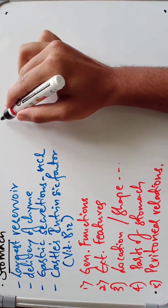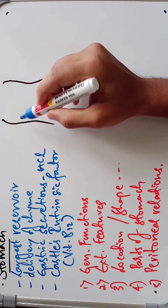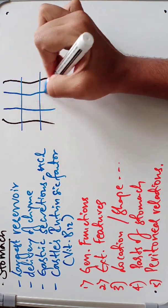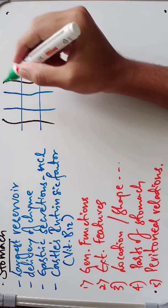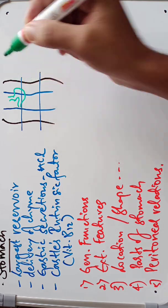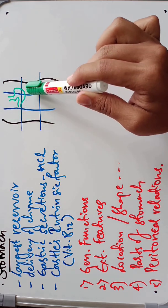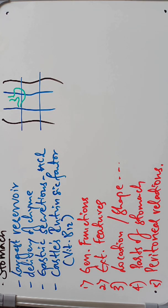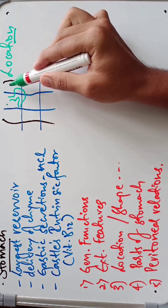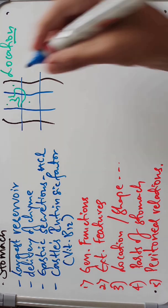Coming to the location of the stomach — the region of the abdomen is divided into nine regions by two planes: the transpyloric plane and the trans-tubercular plane, plus two vertical lines called the right and left lateral planes. The stomach is located in the epigastrium, left hypochondrium, and partly in the umbilical and left lumbar regions.